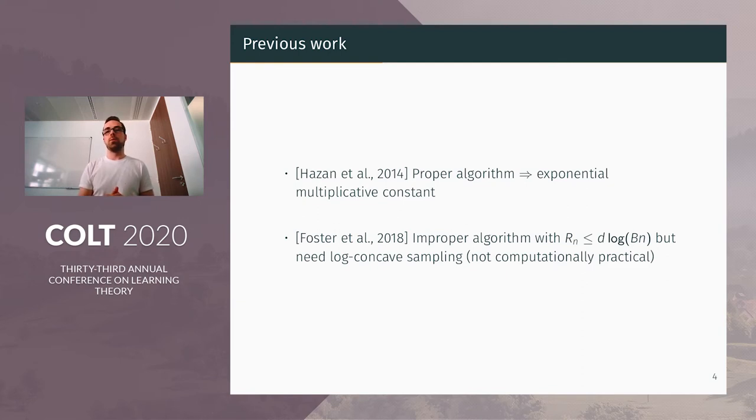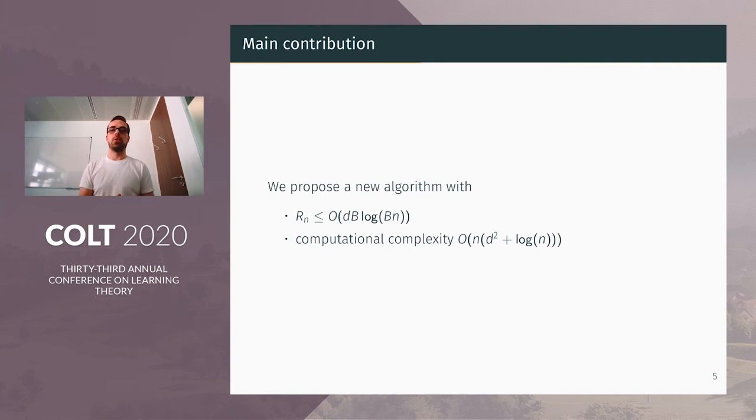To do it, they made the observation that the logistic loss is one-mixable compared to exponential minus B exp-concave, and they use the Vovk aggregating algorithm. However, in this algorithm, they need to sample from log-concave distribution, which is possible to do in polynomial time with MCMC method, but it's not really computationally practical. So it left open the question to achieve the same kind of statistical performance, but with a much more practical algorithm.